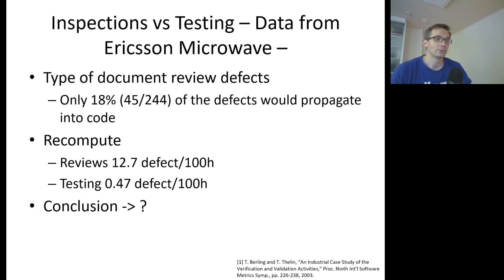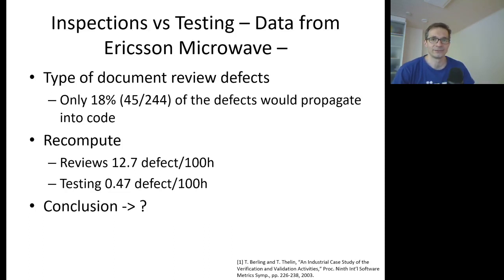Still, 12.7 defects per 100 hours is clearly superior to software testing's 0.47 defects per 100 hours. However, the drop in the effectiveness of reviews is rather dramatic. Still, the conclusion at this point would be that software reviews are much more efficient than software testing.